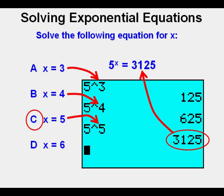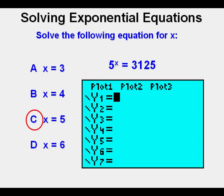Another way to solve this problem that is pretty neat is by graphing. Go to the y equals. Enter 5 to the power of x here. And then to solve by graphing to make it easy, we solve the right side of the equation 5 to the x power equals 3125 by subtracting 3125.